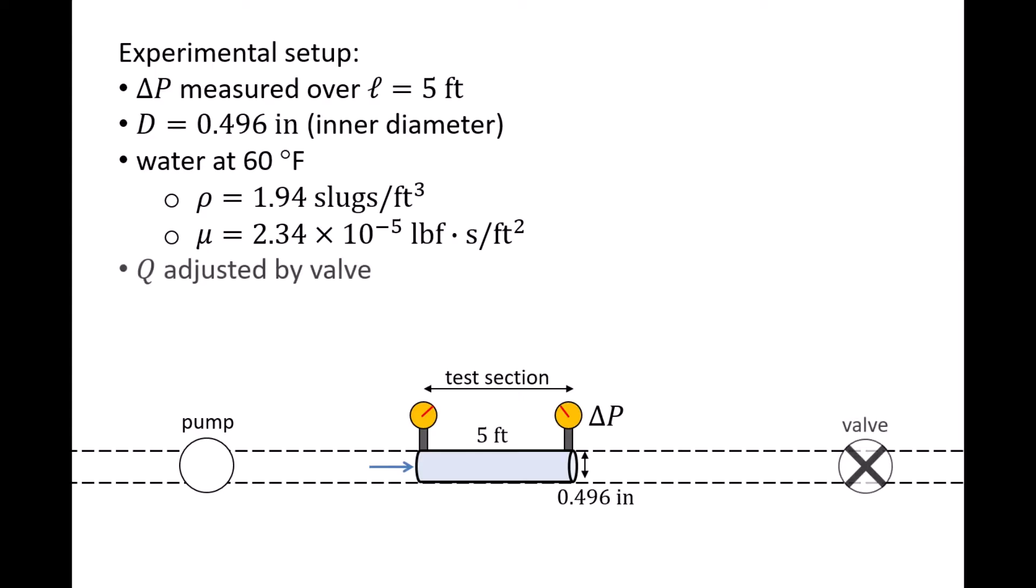We can adjust the volumetric flow rate Q, which varies the Reynolds number, by opening or closing a valve. The volumetric flow rate is measured by a flow rate meter, such as a venturi meter. Since the volumetric flow rate is equal to the flow speed V times the cross-sectional area of the pipe A, we can calculate the flow speed.